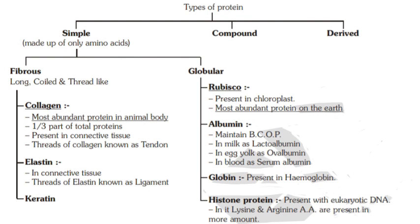Fibrous proteins are long, coiled, and thread-like proteins. An example is collagen, which is the most abundant protein in the animal body — one third of total proteins in animals are collagen. Collagen is present in connective tissue, and threads of collagen are known as tendons.